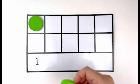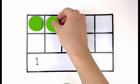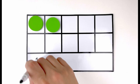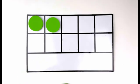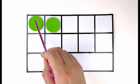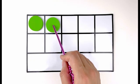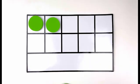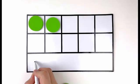I'm going to add one. How many green circles do you see? Let's count. One, two. Two green circles. Number two.